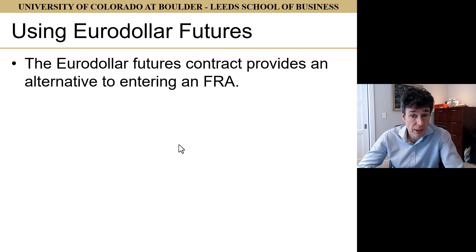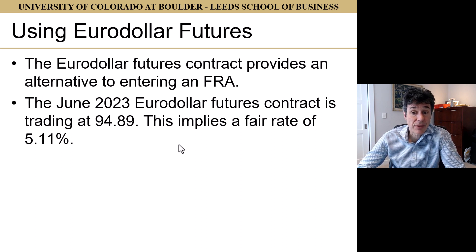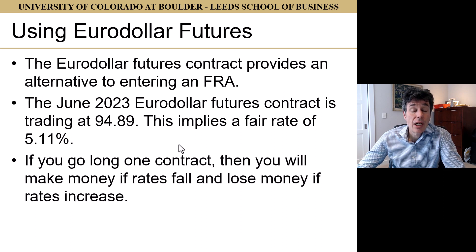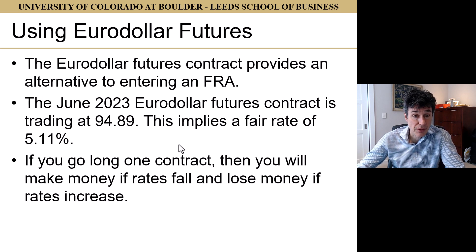An alternative is the Eurodollar futures contract — an alternative to the FRA. The June 2023 Eurodollar futures contract is trading at 94.89%, which implies the fair rate of 5.11%. We're going to go long one contract. If we're long one contract, we make money if rates fall and lose money if rates increase. This is the position we want because our risk is on our million-dollar deposit — we're worried that rates are going to fall. So we want to offset that with the Eurodollar futures contract.